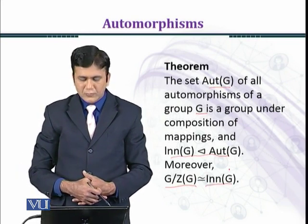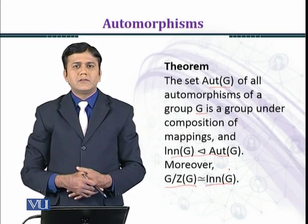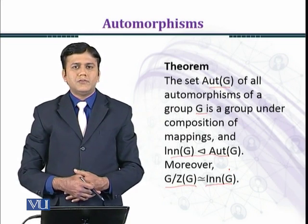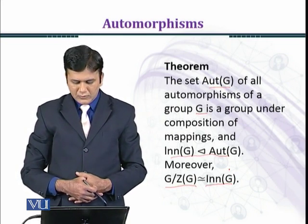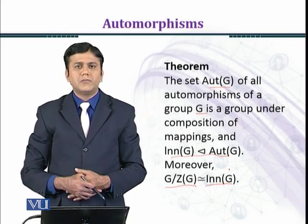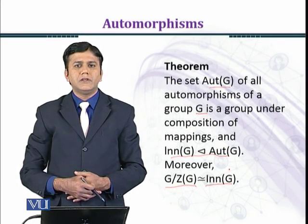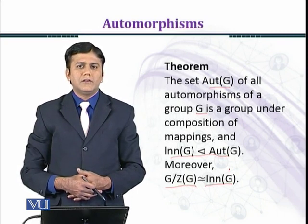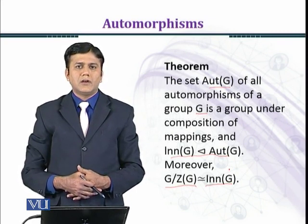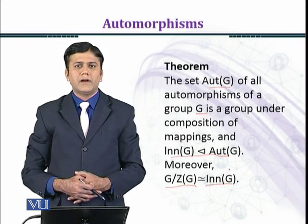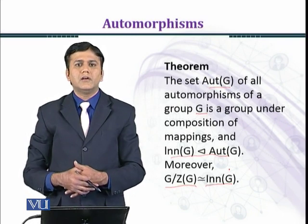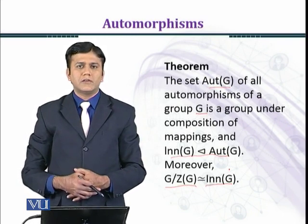As we know, the center of G is a normal subgroup of G, and G over Z(G) provides us the quotient group.